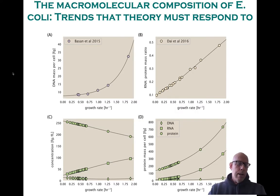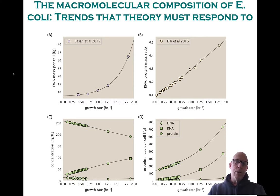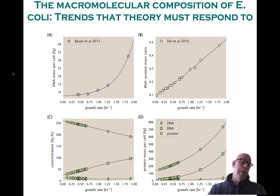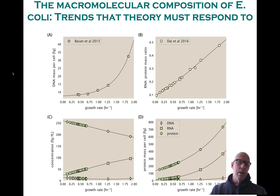Before talking about the experimental methods, I wanted to point out some regularities in the composition of a cell as a function of growth rate that are fascinating and call for an explanation. Some of these things were already discovered in the late 1950s by Elio Schechter and others. I call your attention specifically to the lower left, where you're seeing the DNA, RNA, and protein fractions of the cell as a function of growth rate. And I hope you appreciate that as the cell grows faster and faster, the RNA to protein ratio, shown in the upper right, actually goes up — basically a signal that the way the proteome is divided up varies as a function of growth rate.